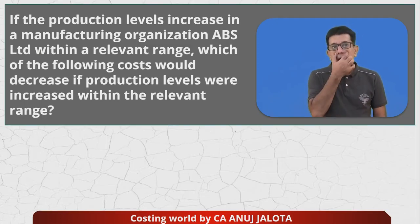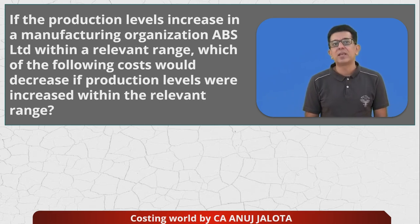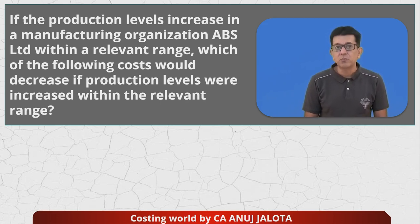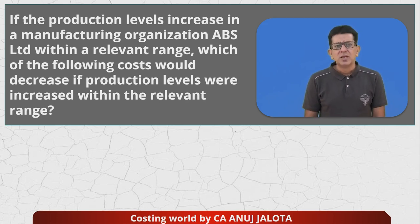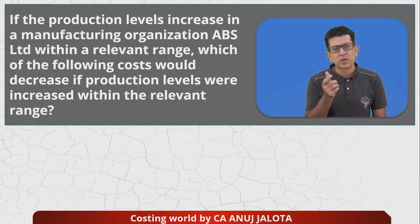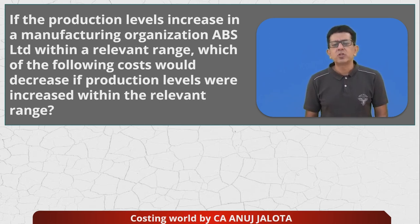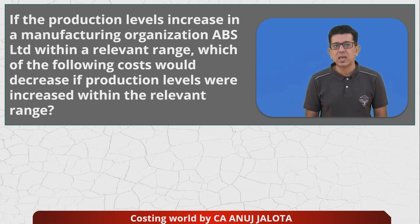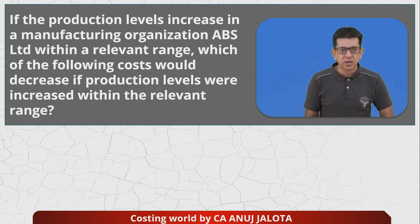Let's do this one. If the production level increases in a manufacturing organization, ABS Limited, within a relevant range — for example, if you were producing say 10,000 units and you produce say 11,000 — then which of the following costs would decrease if the production levels were increased within the relevant range?